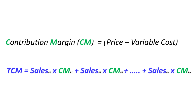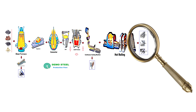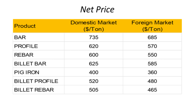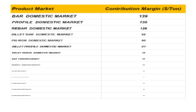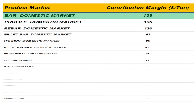The first thing you notice is pricing. Their domestic prices — selling within their own country — are generally higher than their export prices. Less competition, maybe better brand recognition at home. So if you sorted their products purely by how much contribution margin each ton makes, the product called Bar Domestic Market pops to the top, boasting the highest CM: $139 for every ton sold.